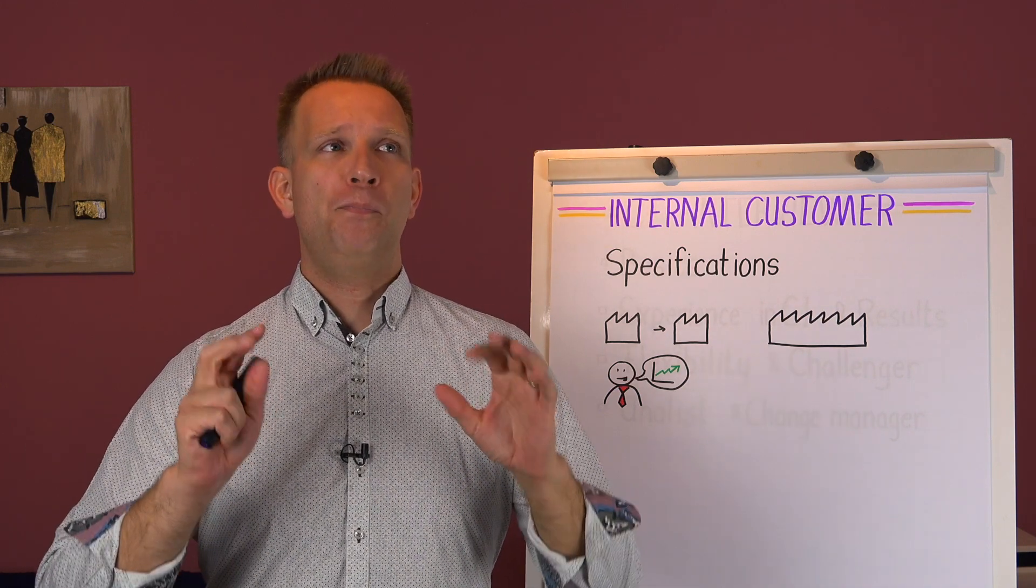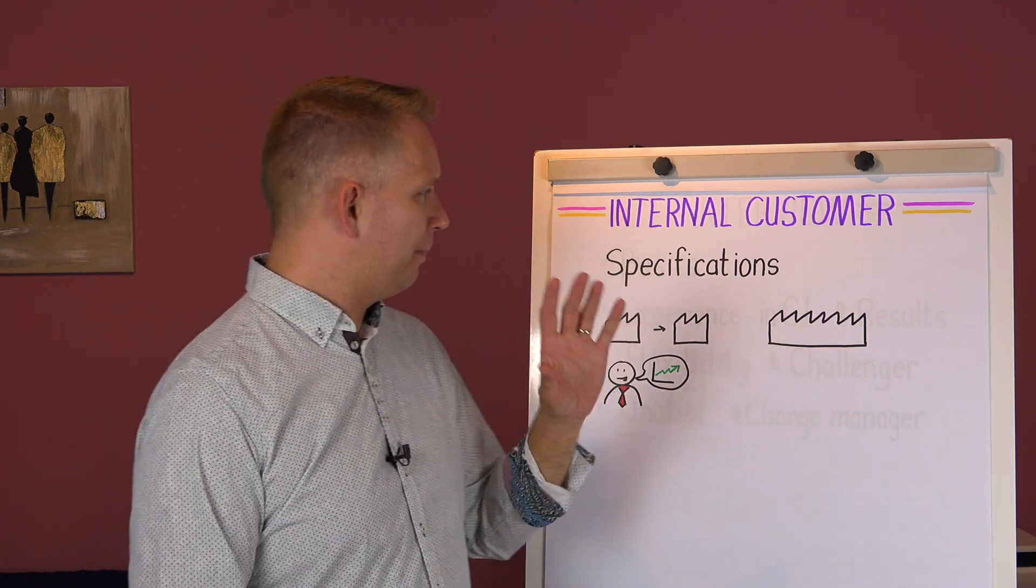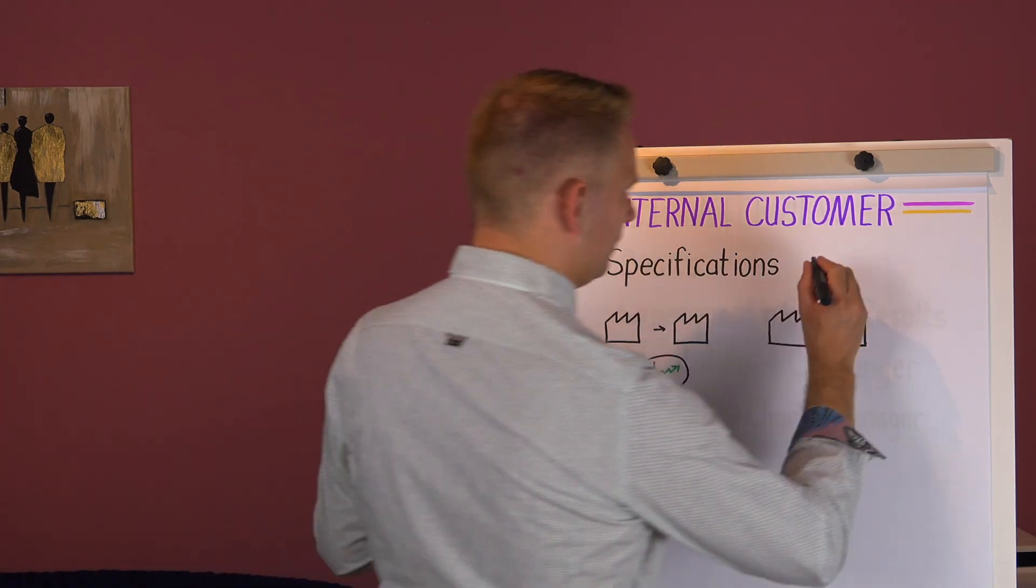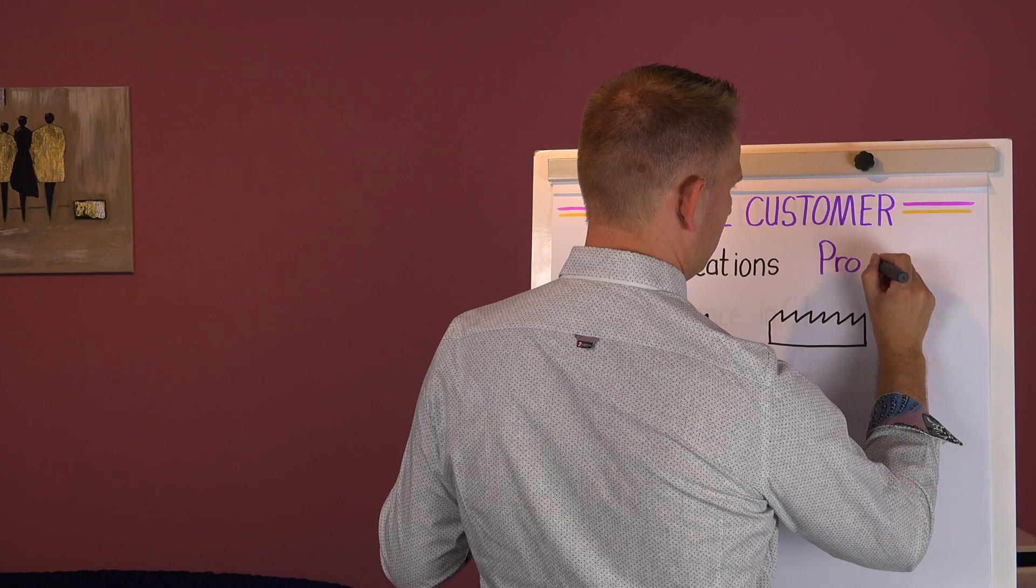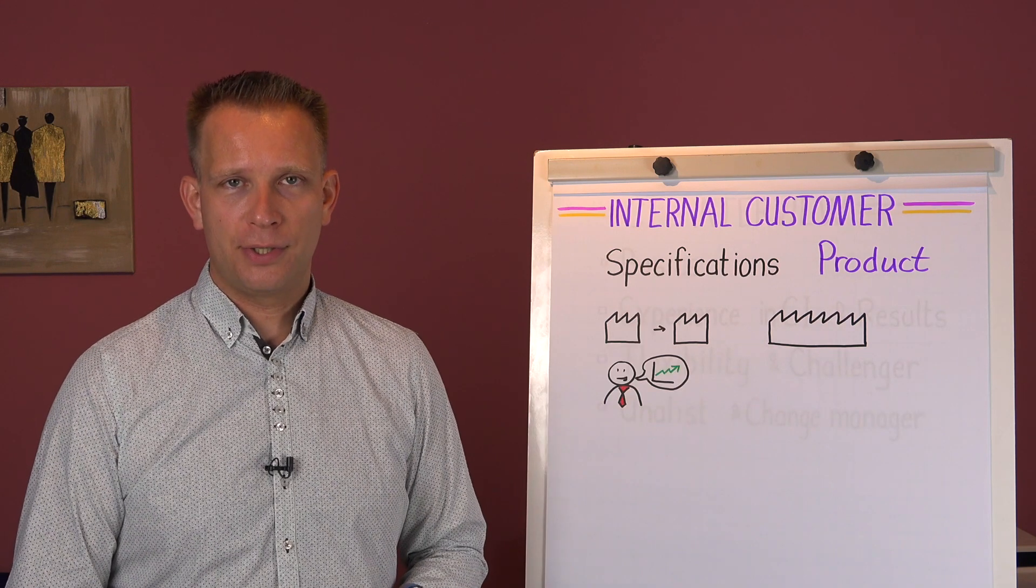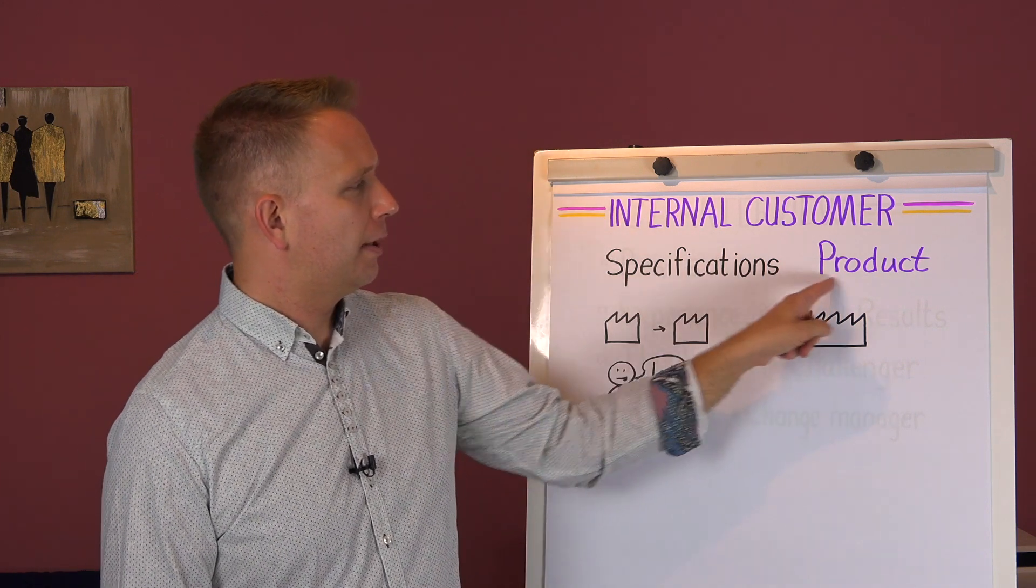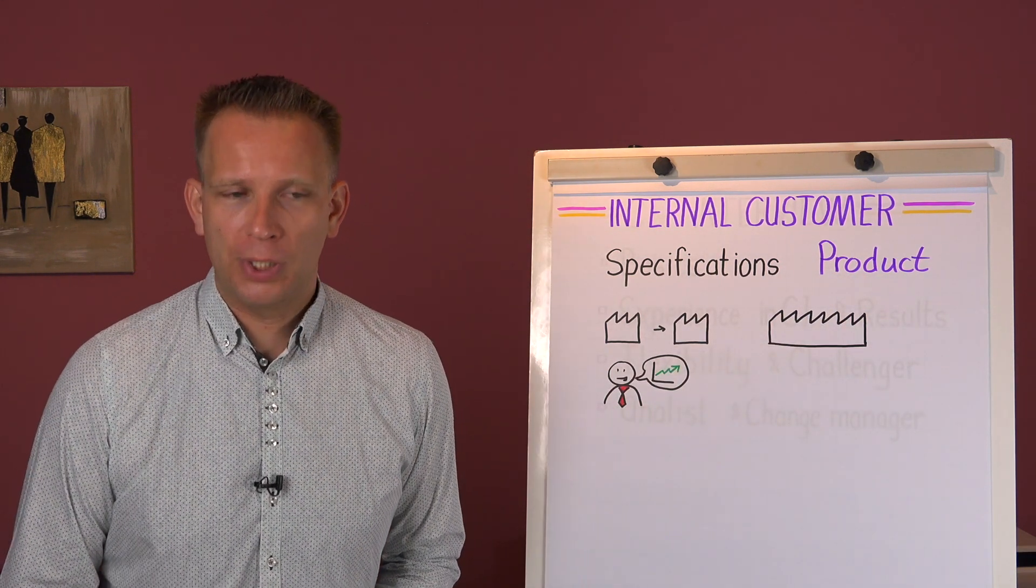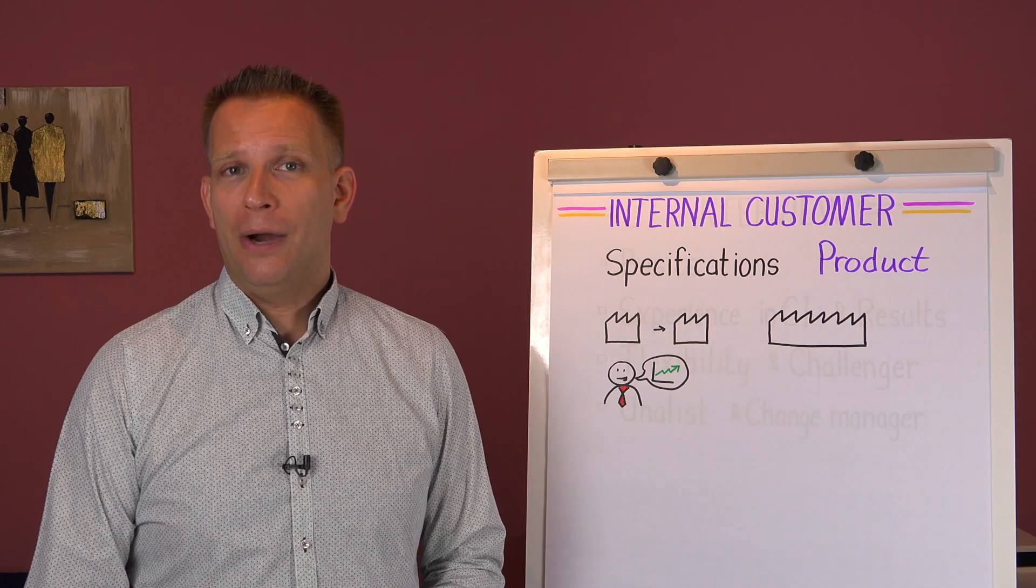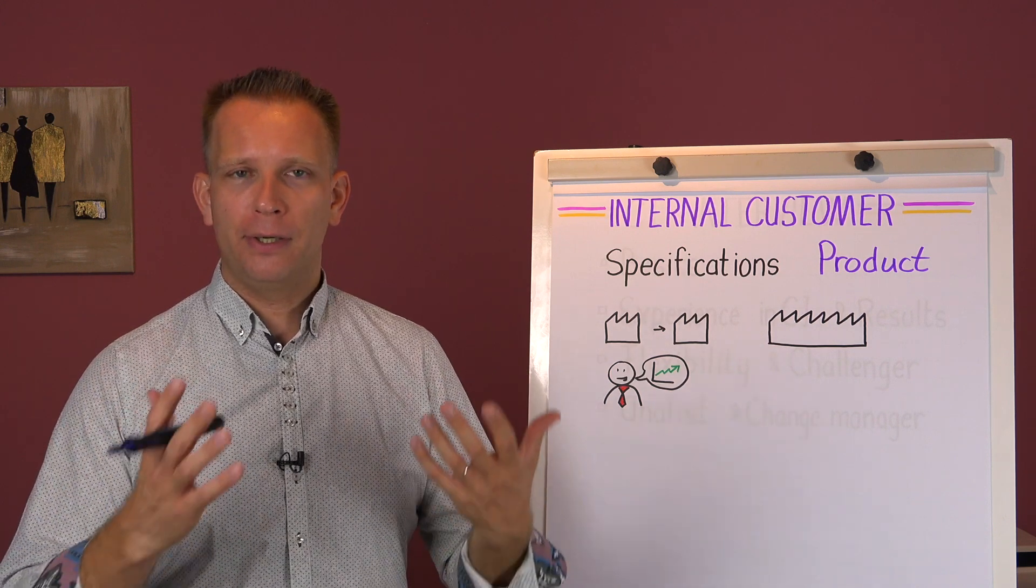When we are talking about processes and about the products that they make, an important part is the specifications. But the specifications are about the product. So we're not talking about process specifications. We have good settings, we have performance indicators. The specification talks about what the product should look like, feel like, how safe it should be, how high, how heavy, all kinds of things like that. It is a quality parameter of your product.